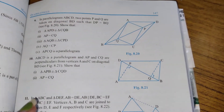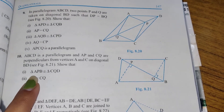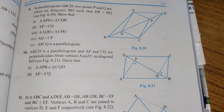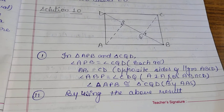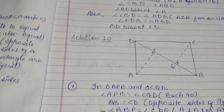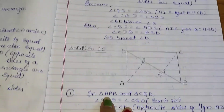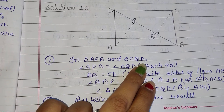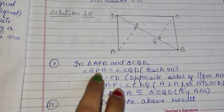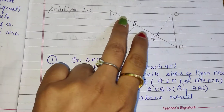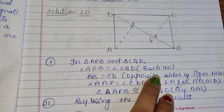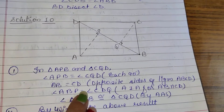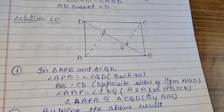First we have to prove these two triangles are congruent. In triangle ABB and triangle CQD: angle ABB is equal to angle CQD — both are perpendiculars, each equal to 90 degrees. AB is equal to CD — opposite sides of parallelogram ABCD. Angle ABB is equal to angle CDQ — alternate interior angle for AB parallel CD.